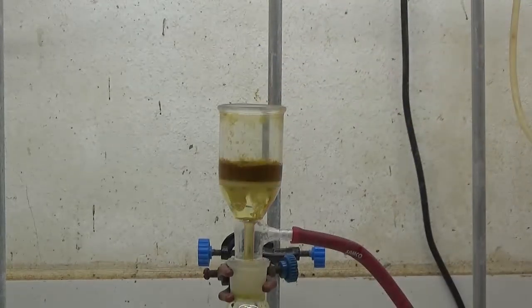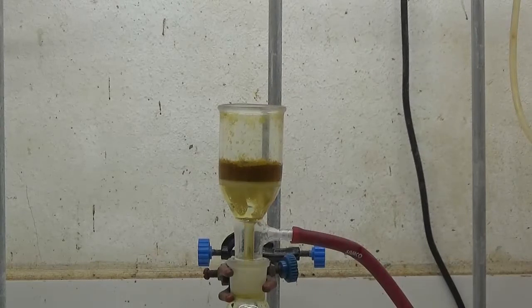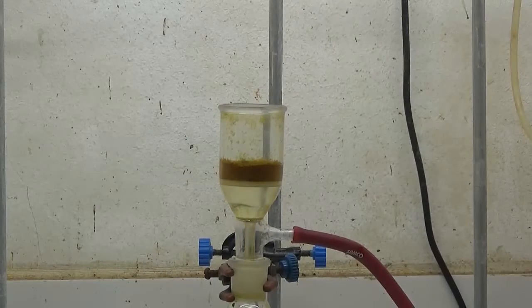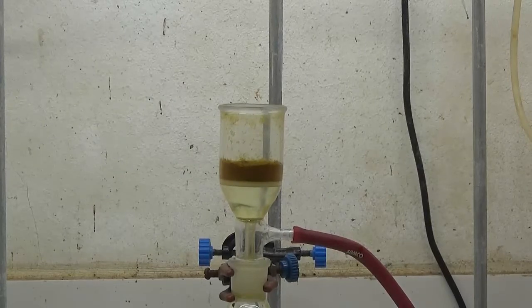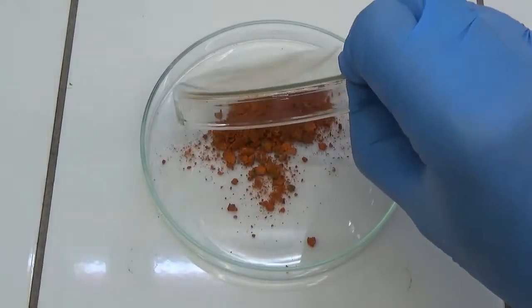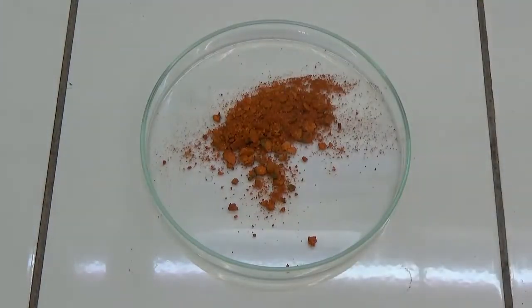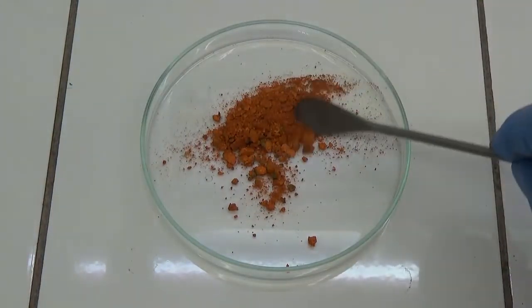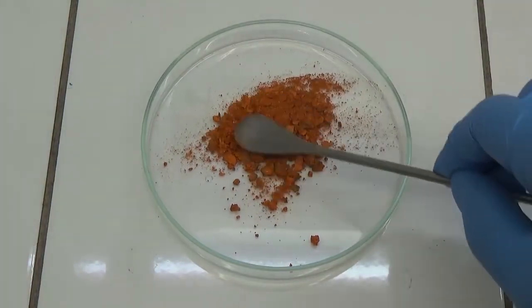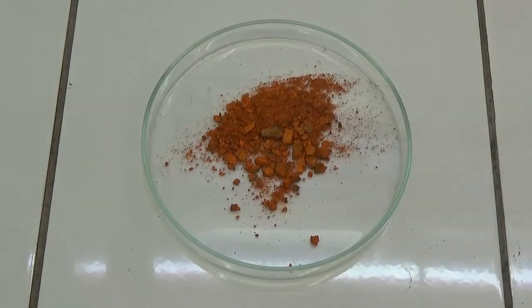Dry the product by passing air into the filter funnel and then with heat in oven at 60 degrees Celsius. The product obtained is an orange powder that melts above 300 degrees Celsius. It can be crystallized from water to purify.